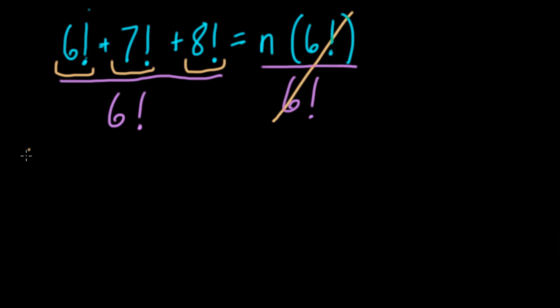So that means we have 6 factorial over 6 factorial, right? The first term divided by 6 factorial, plus 7 factorial over 6 factorial, plus 8 factorial over 6 factorial, and that equals n.